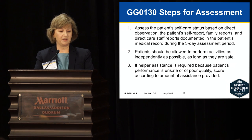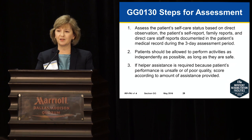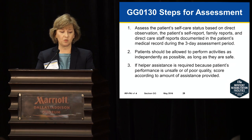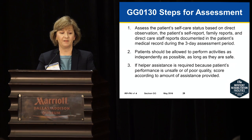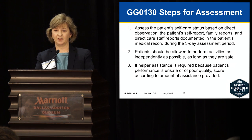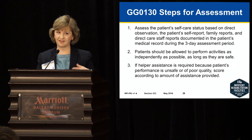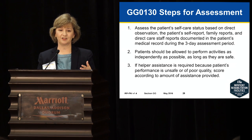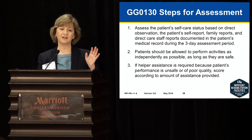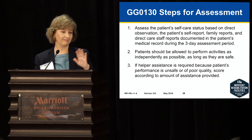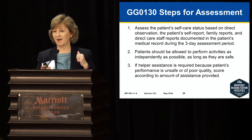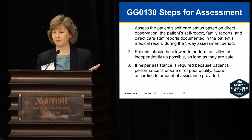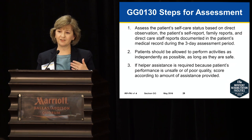Patients should be allowed to function as independently as possible as long as they're safe. If helper assistance is required because the patient's performance is unsafe or of poor quality, score according to the amount of assistance. If a patient says they don't feel safe and want you to stay with them, and the nurse or therapist does stay, then there is helper supervision. If clinical judgment was that the person didn't need someone there, then the score would be that the person was independent. Whatever is happening is what should be scored.